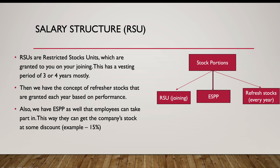The second type is refresher stocks, which are given every year based on performance. Refresher stocks are typically 40 to 80 percent of the initial RSUs you received. They also have a vesting period of either three or four years, similar to the initial grant.